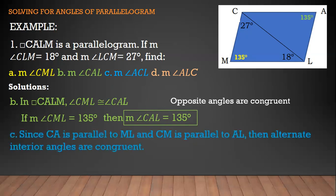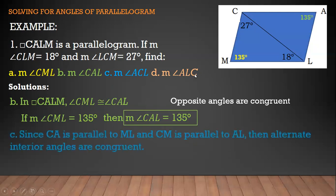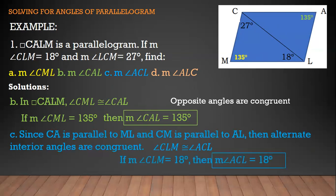Next, letter C: find angle ACL. Since segment CA is parallel to segment ML, and segment CM is parallel to segment AL, the alternate interior angles are congruent. So angle CLM is congruent to angle ACL. If the measure of angle CLM is 18 degrees, then the measure of angle ACL is also 18 degrees.